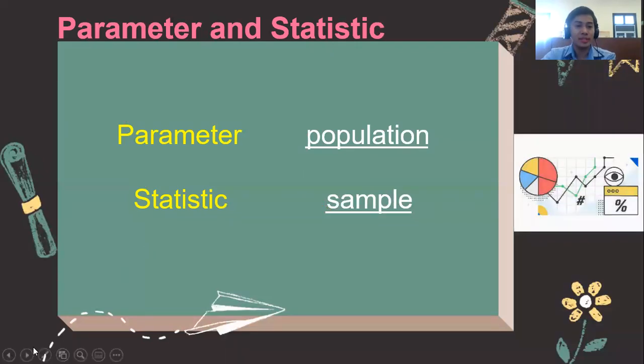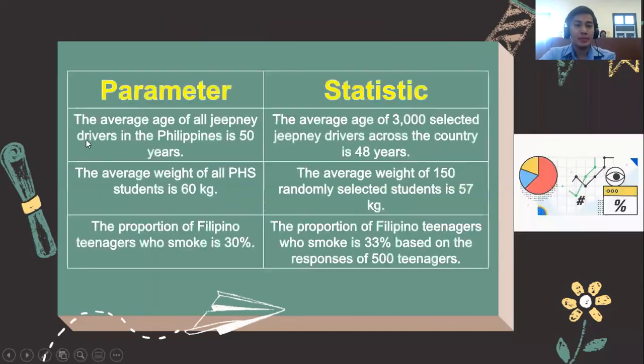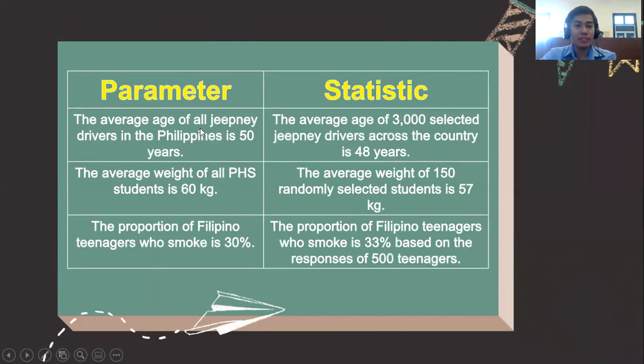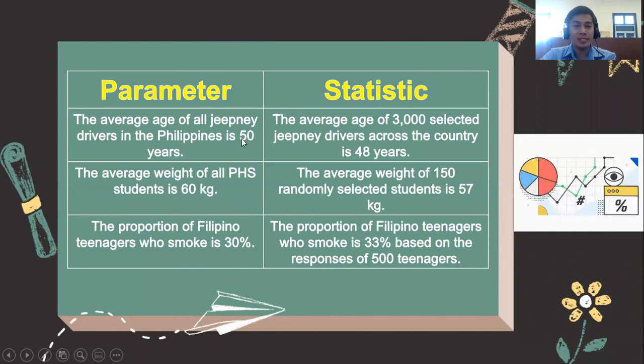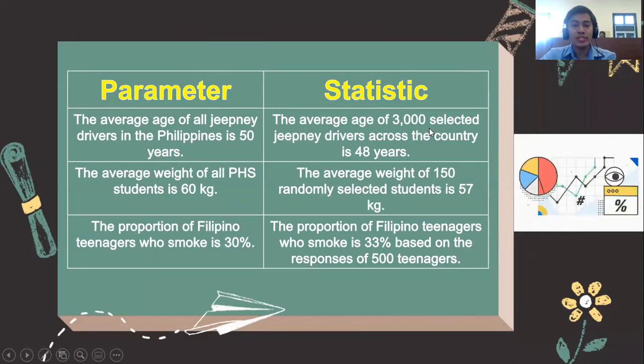Now, let us distinguish the difference between a parameter and a statistic. For a parameter: the average age of all jeepney drivers in the Philippines is 50 years. While for a statistic: the average age of 3,000 selected jeepney drivers across the country is 48 years. Notice that the samples are indicated in statistics, but the parameter describes all jeepney drivers in the Philippines.